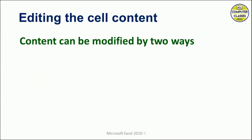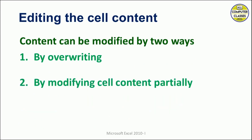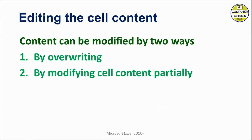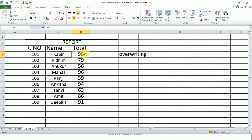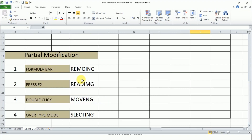Cell content can be modified in two ways: one is by completely overriding, and the second is by modifying the cell content partially. For complete overriding, select the cell — for example the value is 98 and I want to make it 89 — just type the new value and press Enter. It is overwritten.